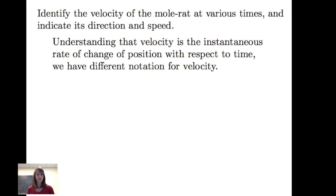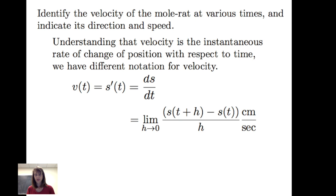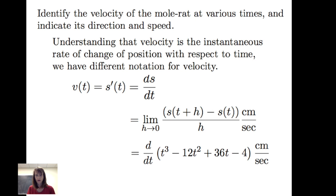Velocity is the instantaneous rate of change of position with respect to time. We know that velocity is the derivative of the position function with respect to time, or ds/dt, which is the limit as h goes to zero of s evaluated at t plus h minus s evaluated at t, divided by h. Since position is in centimeters and time in seconds, the units of velocity are centimeters per second. Therefore, v of t equals 3t squared minus 24t plus 36 centimeters per second.